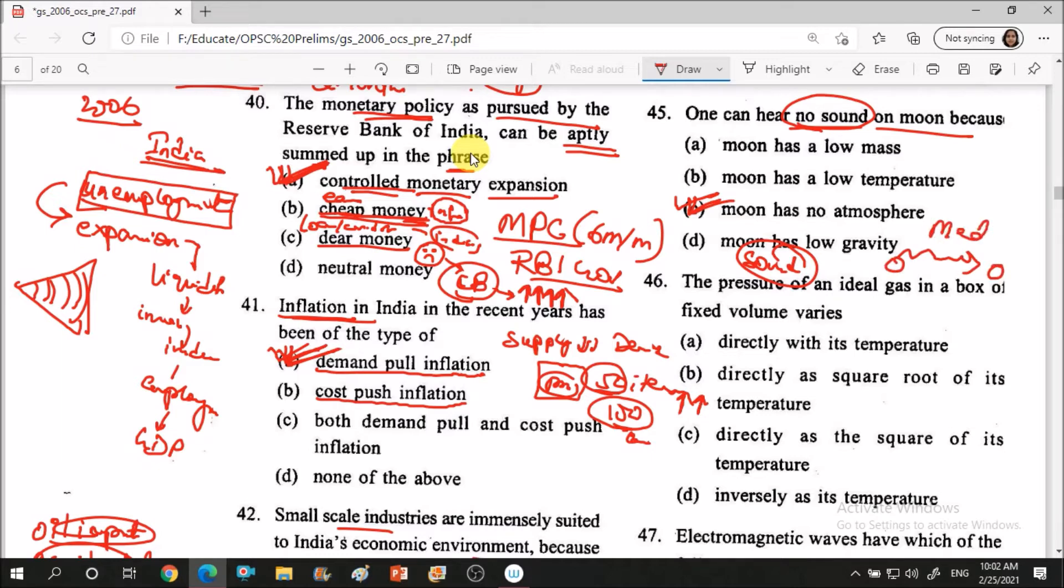Light wave, sound wave, these waves need medium to transmit. To moon me koi bhi sound nahi bana sakte. Why? Because there is no atmosphere. That is one thing.